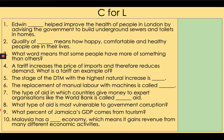Number one: Edwin Chadwick helped improve the health of people in London by advising the government to build underground sewers and toilets and homes. Two: quality of life means how happy, comfortable and healthy people are in their lives. Three: what word means that some people have more of something than others? Inequality. Four: a tariff increases the price of imports and therefore reduces demand — it's a trade barrier. Five: the stage of the DTM with the highest natural increase is stage two, because the birth rate and death rate have the biggest difference between them.